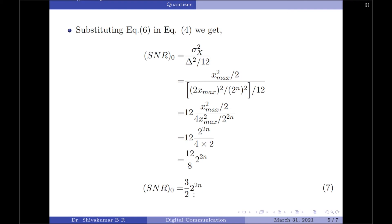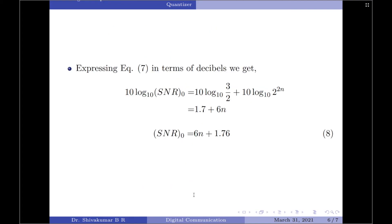However, we should note that we commonly express the signal to noise ratio in terms of decibels. So, let us now apply 10 log₁₀ on both the LHS as well as the RHS of equation 7. So, 10 log₁₀(SNR_0) equals 10 log₁₀(3/2) plus 10 log₁₀(2^(2n)). Now, 10 log₁₀(3/2) is equal to 1.7 plus we have 2n term here.